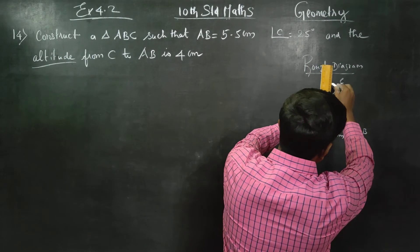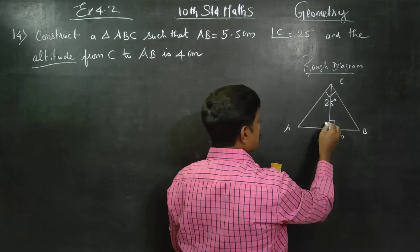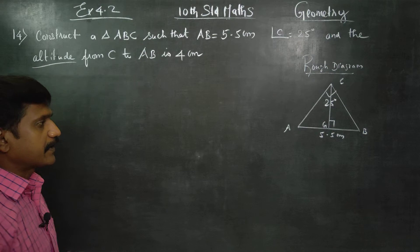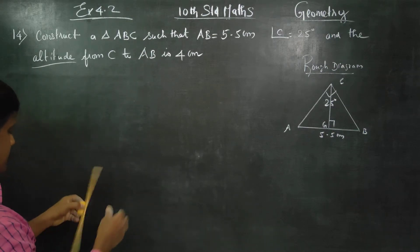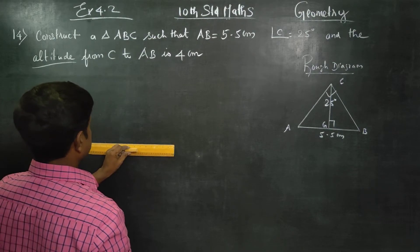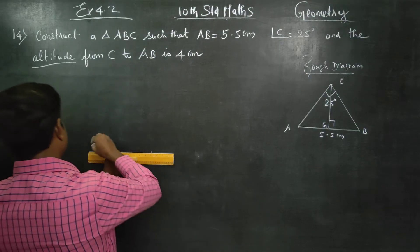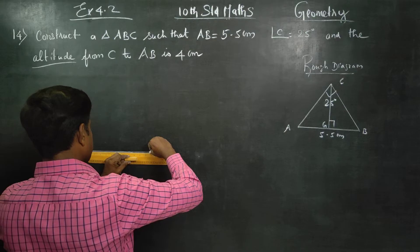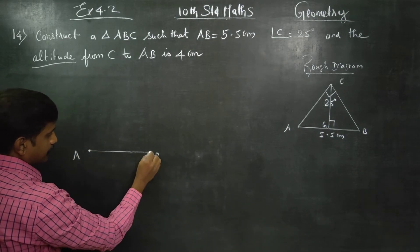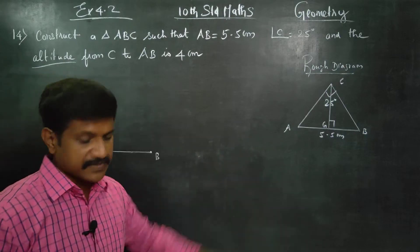For the altitude, you have to draw a perpendicular. This is your rough diagram. After completing the rough diagram, for the main diagram, first draw a line of 5.5 cm — that is the base AB, 5.5 cm.